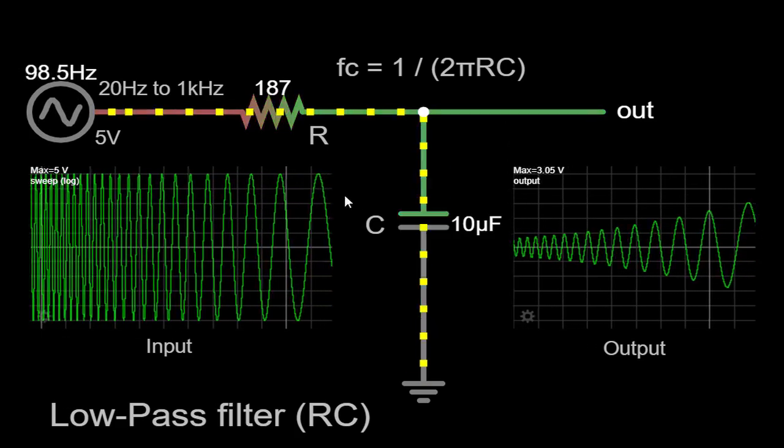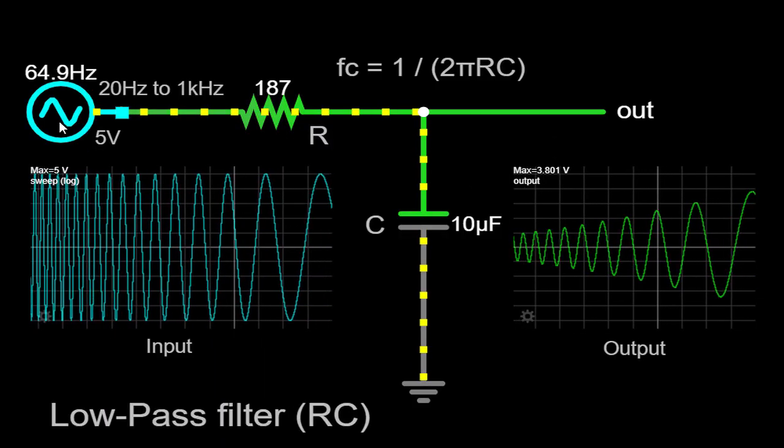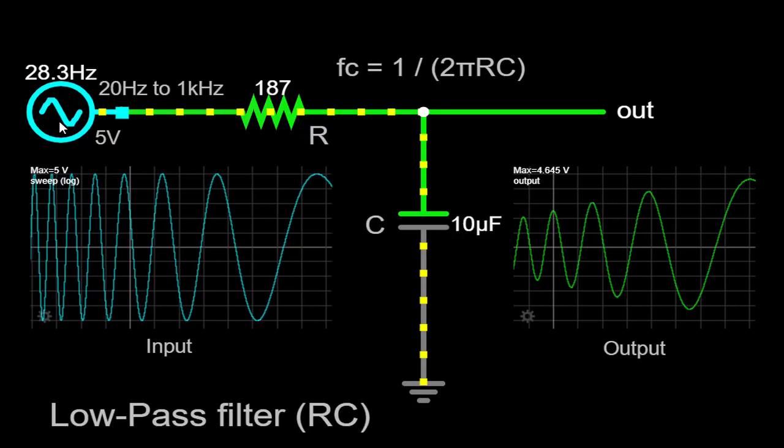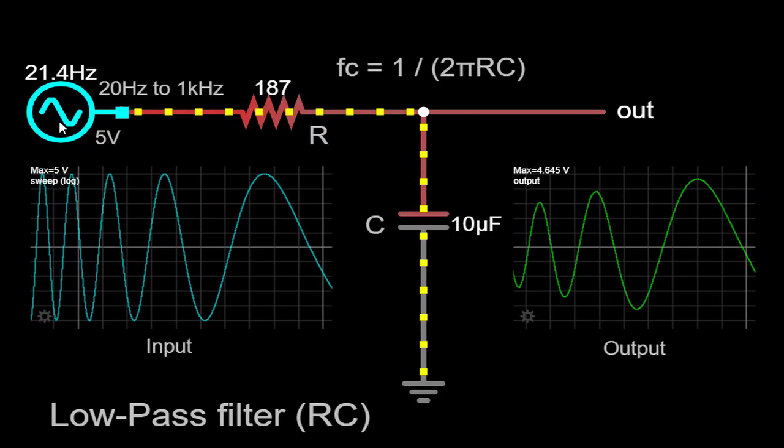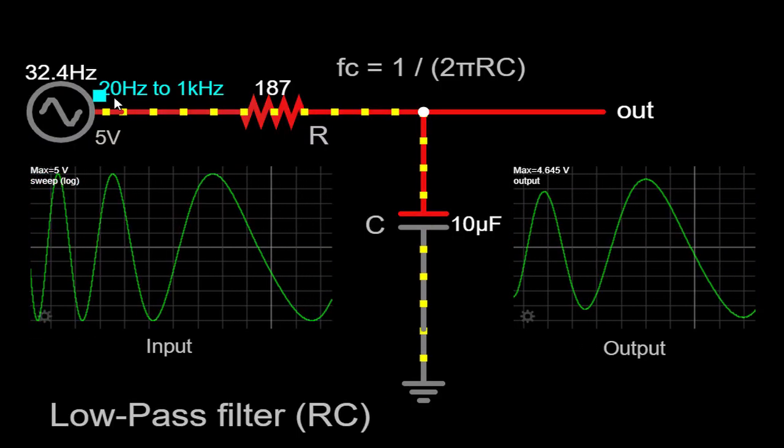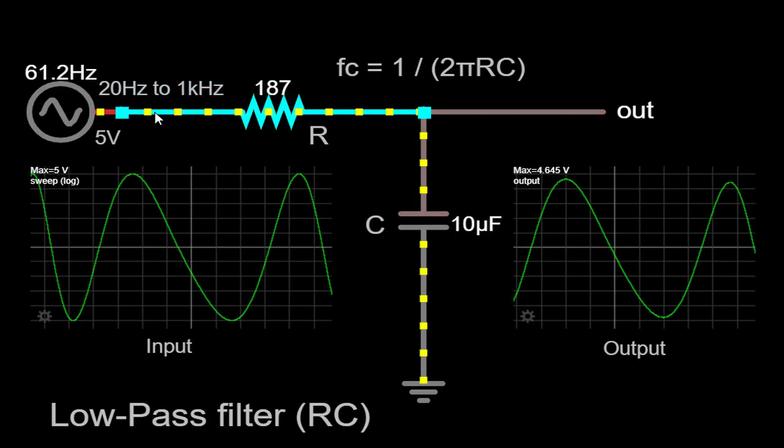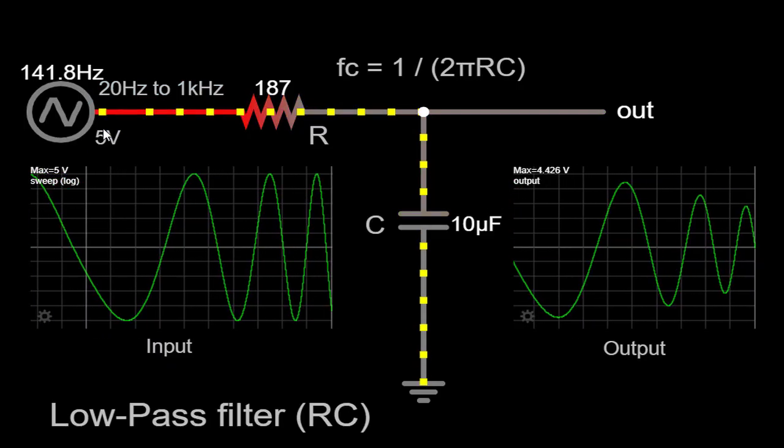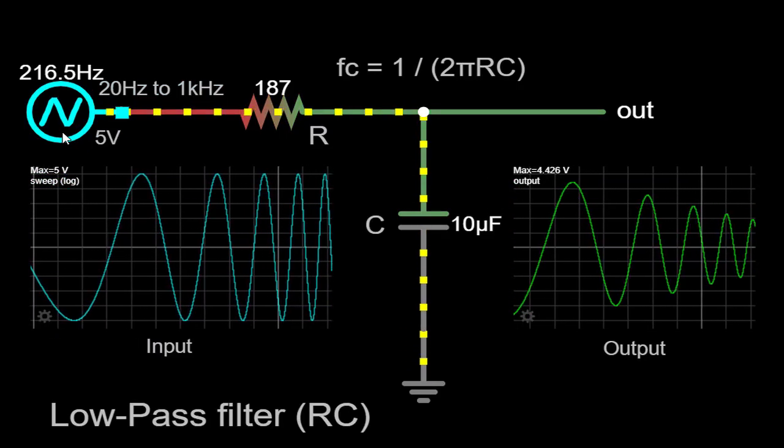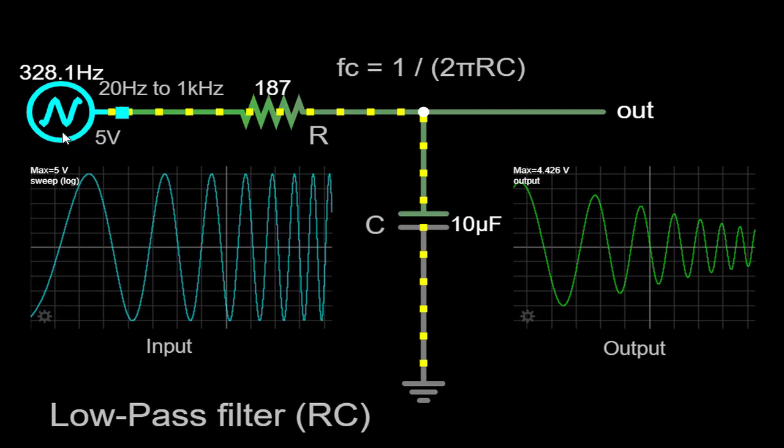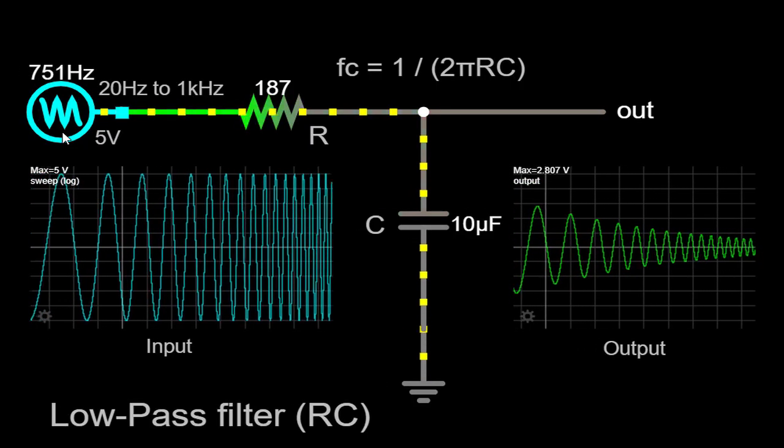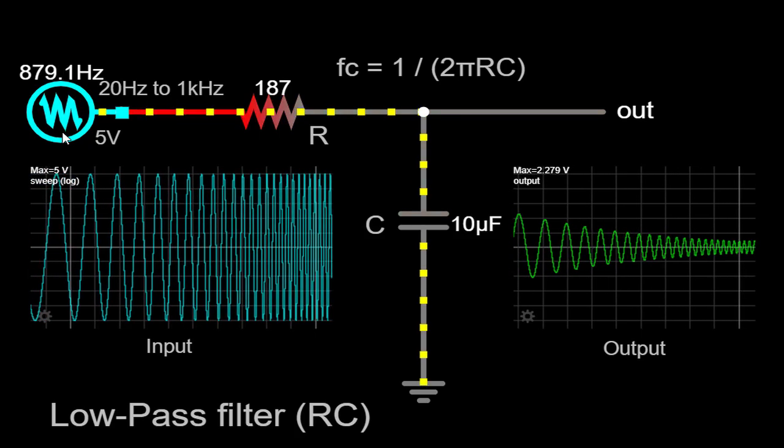Now, let's explore the sweep settings of our circuit simulator, which will allow us to observe the filter's response across different frequencies. We have chosen a logarithmic sweep, ranging from a minimum frequency of 20 Hz to a maximum frequency of 1 kHz. This frequency range provides a comprehensive overview of the filter's behavior. Additionally, we have set the sweep time to 100 ms, ensuring we can accurately capture and analyze the filter's output.